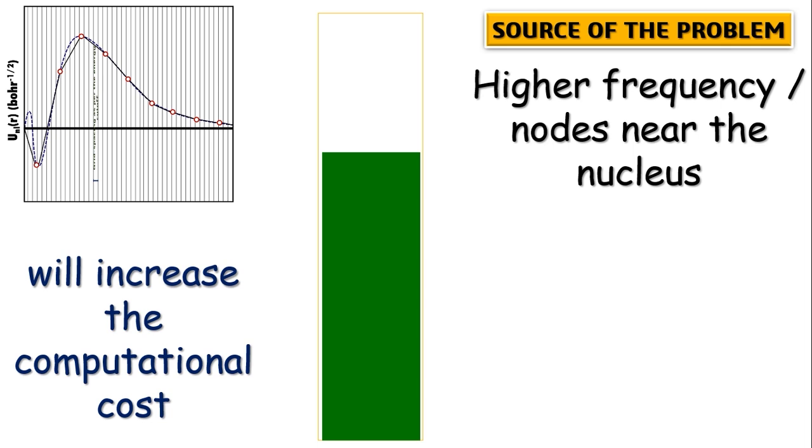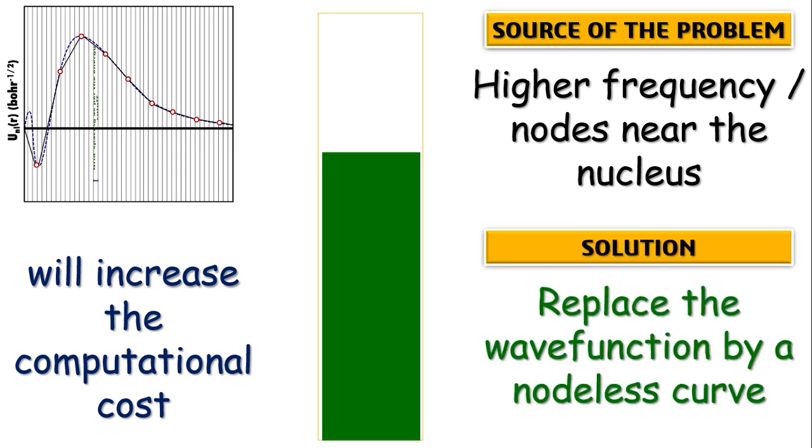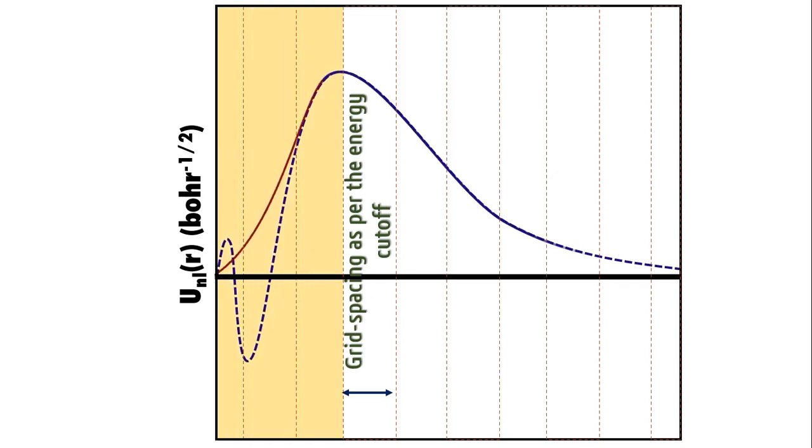Or more technically speaking, more the nodes of the wave functions, less will be the accuracy if the grid spacing remains constant. I hope that is clear to you up to that point. Therefore what we will do here is we'll replace the real wave function by a smooth and nodeless curve in the core region, as shown in this figure.